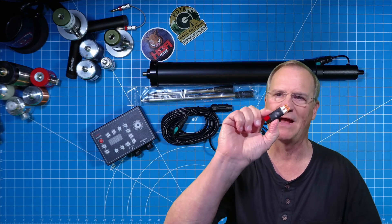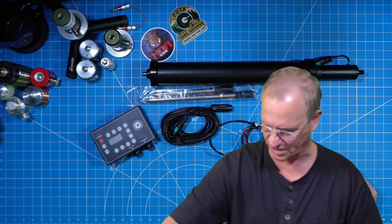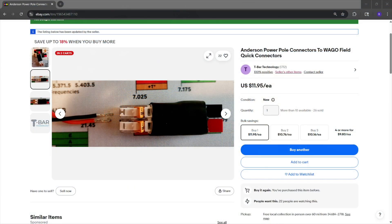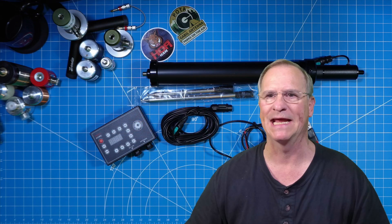Well, today the pro tip is about this little gizmo, this little guy, which is actually an Anderson power pole connector to Wago field quick connector. I'll leave a link in the description below for you to get access to this.